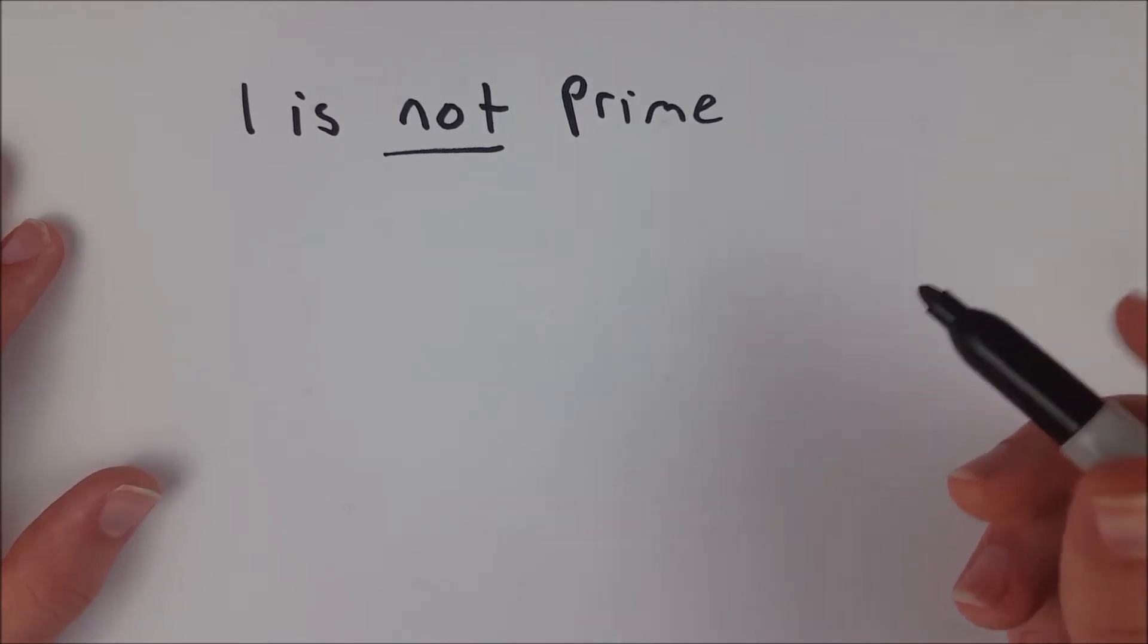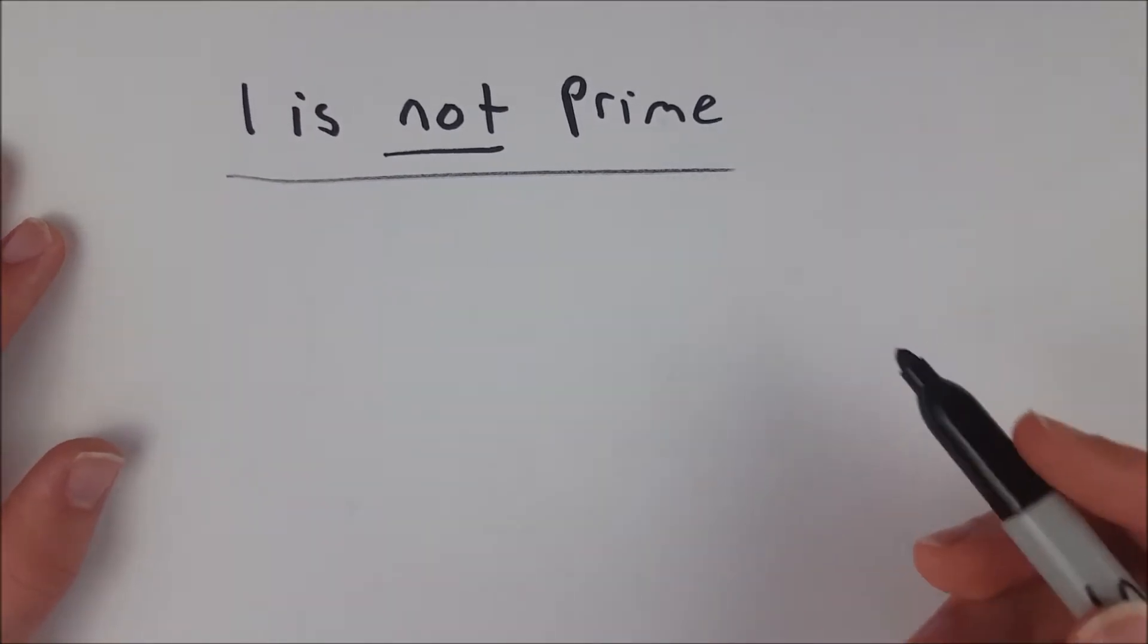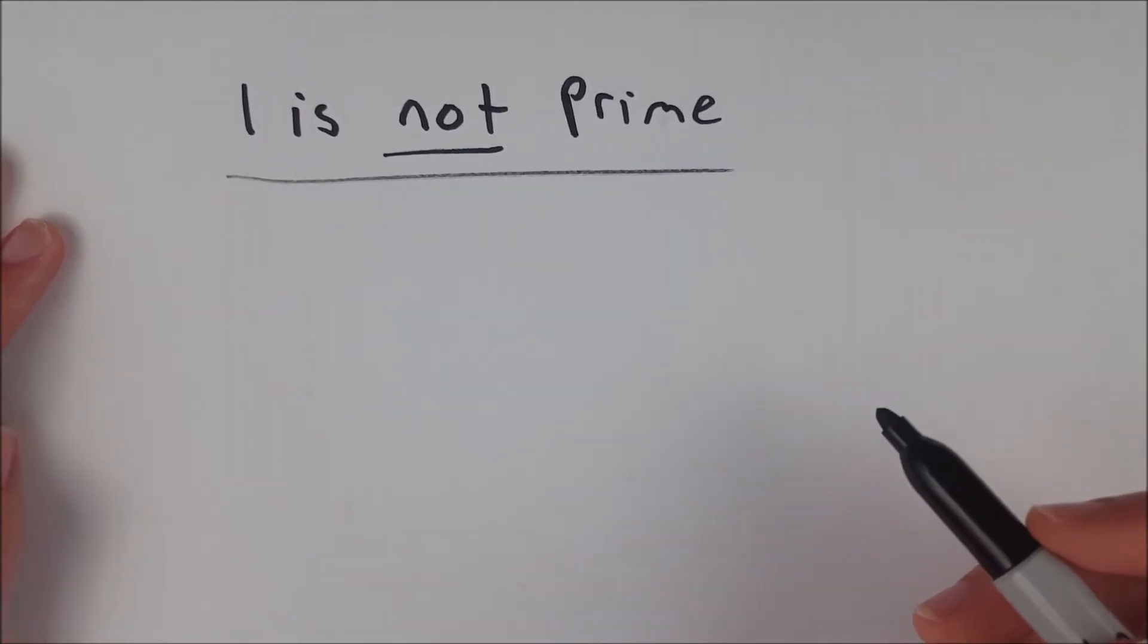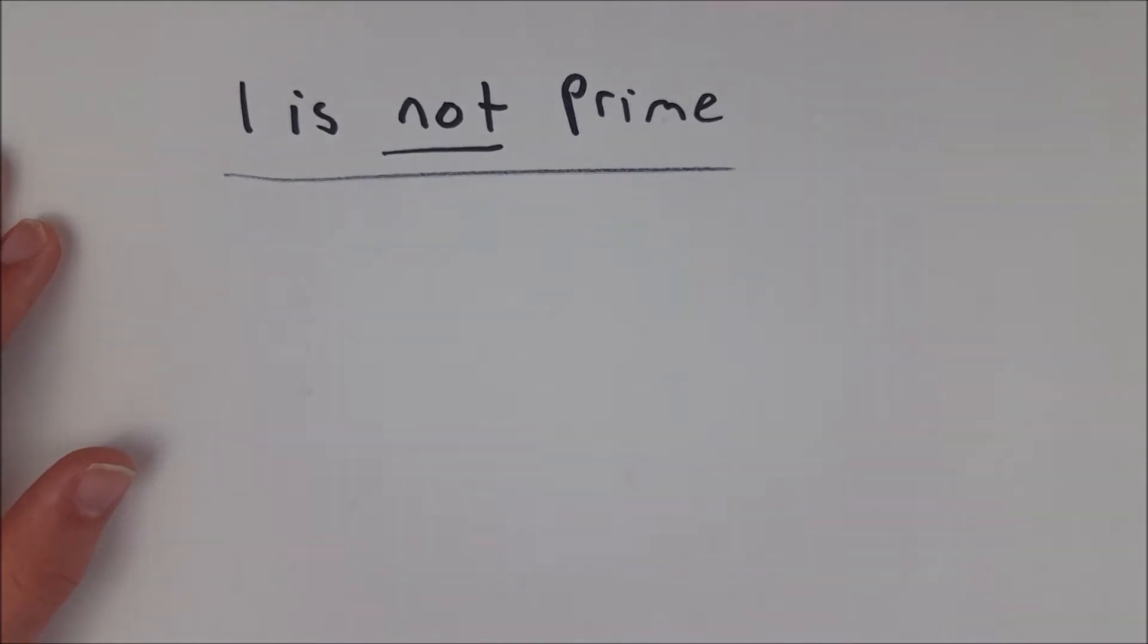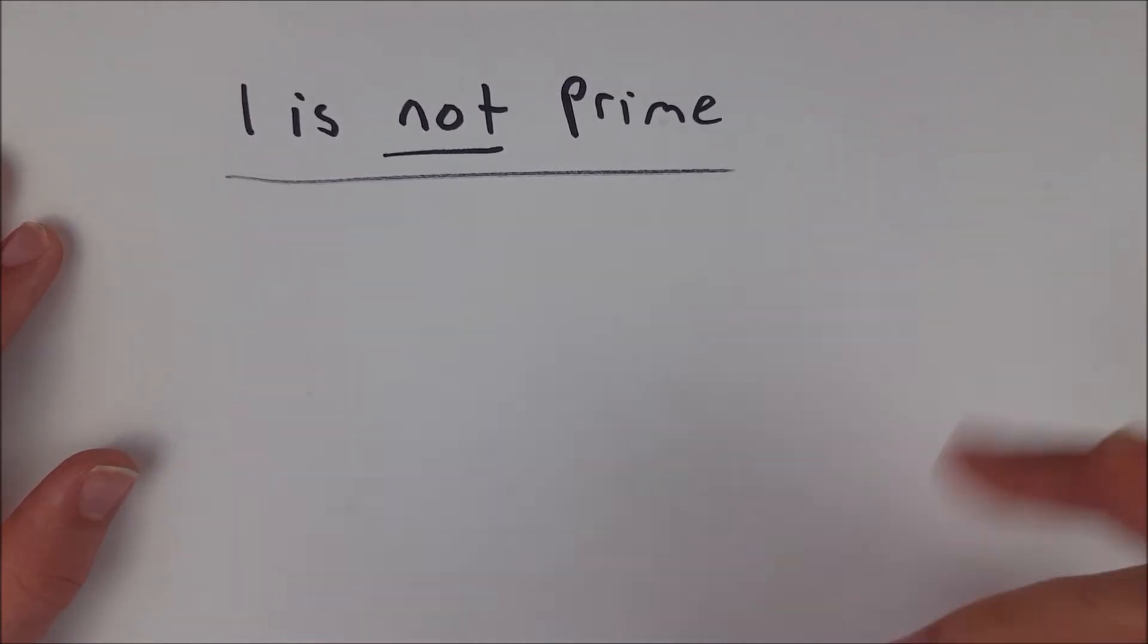Is it prime? Well, spoiler alert, 1 is not prime as I've written here. That doesn't need to be proven, that is by definition. A prime number is any integer greater than 1 such that, you know how the story goes, you know what a prime number is, I hope. If not, I've got videos on that you can check out.